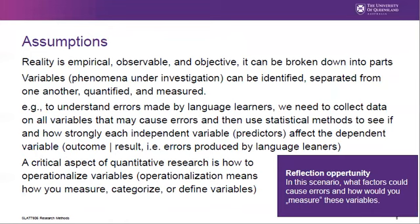Thus, quantitative research asserts that reality is single and objective, which means that we all share one reality and that it can be broken down into parts — referred to as variables. The variables can be easily identified, separated from one another, quantified and measured. For example, to understand errors made by language learners, we need to collect data on all variables that may cause errors, and then use statistical methods to see if and how strongly each independent variable or predictor affects the dependent variable or outcome — that is, in this case, the errors produced by language learners.